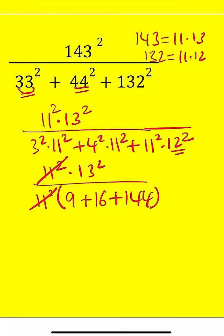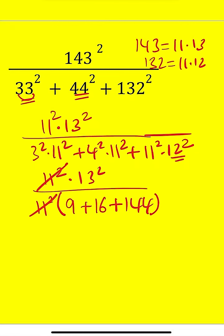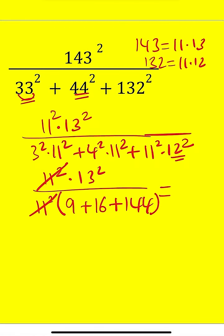Obviously, these two numbers are going to cancel out. And that's going to leave us with 169, which is 13 squared. And then 9 plus 16 is 25, and 25 plus 144 is also 169.